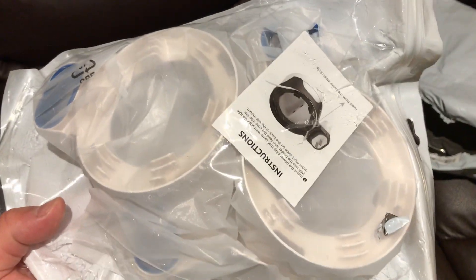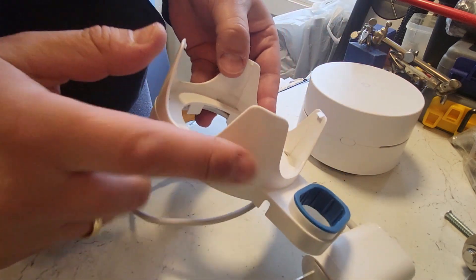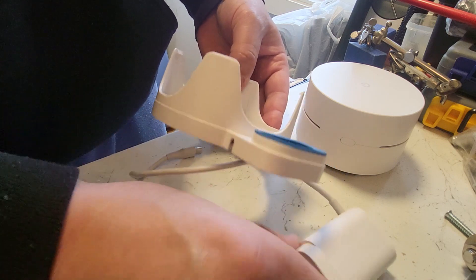Alright guys, so when you buy the actual wall mounts for the Google Wi-Fi, you might find that this actual bit's already on there and you're like, well how does this go on?